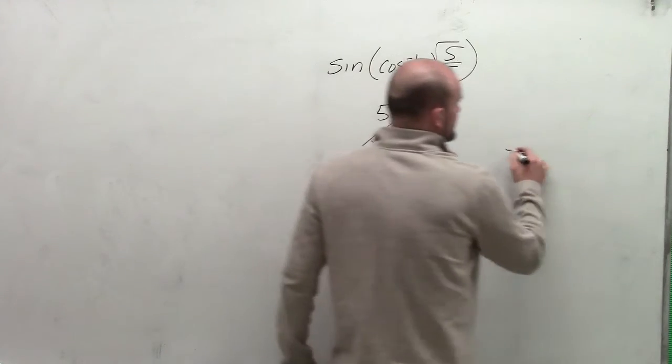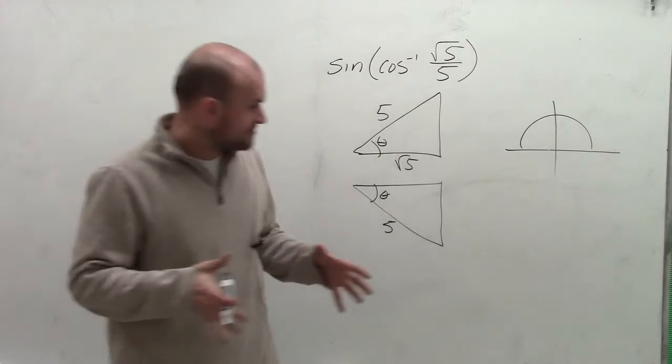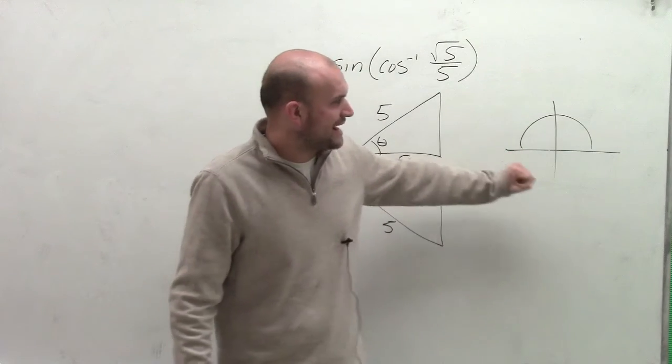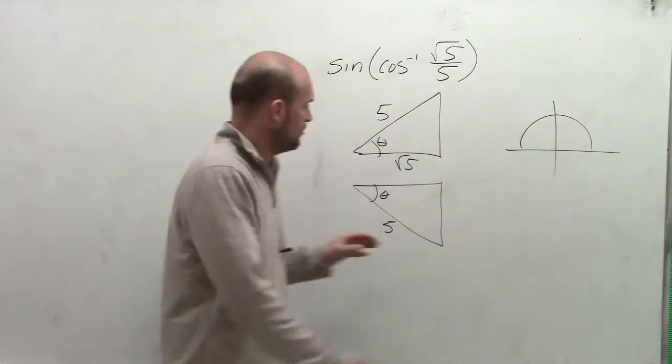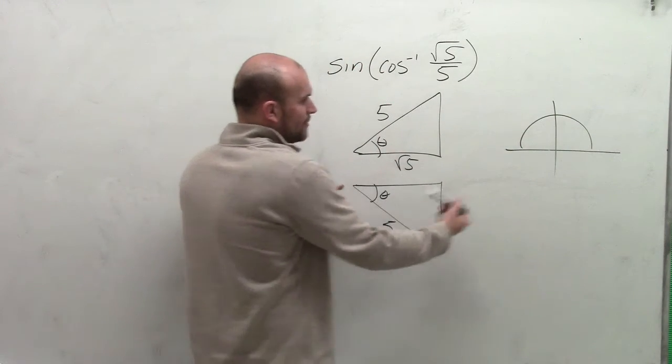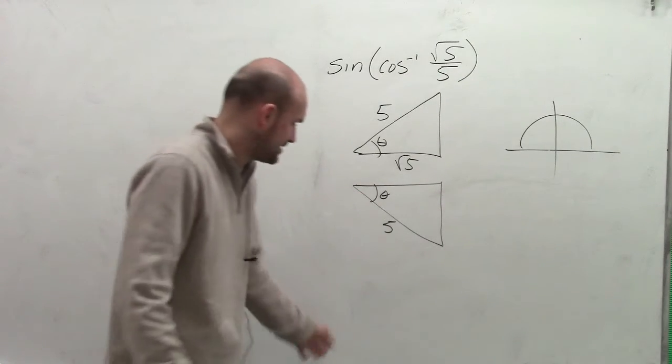But remember, when we were evaluating the inverse cosine function, we understood that the range of your angle had to be between your first and your second quadrant. Well, this triangle right here, we cannot represent in our first or second quadrant with a theta that's going to serve as our central angle.